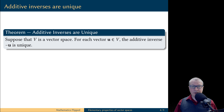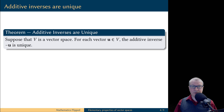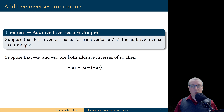Next, we know that each vector in a vector space has an additive inverse. Let's prove that this additive inverse is unique. We take a vector u and assume it has two additive inverses. Our goal is to prove that these two additive inverses are equal to each other.